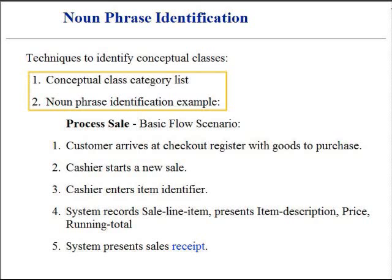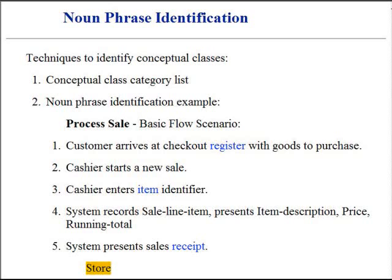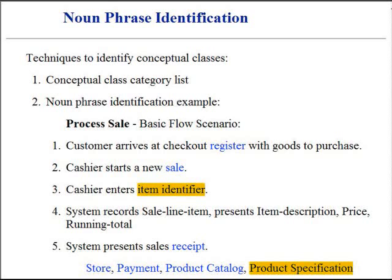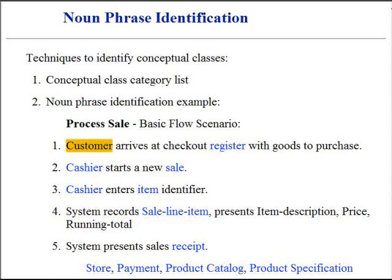From a list of conceptual classes and from corresponding noun phrase analysis, a list is generated of candidate conceptual classes for the business domain. The classes are: Register, Item, Store, Sale, Payment, Product Catalog, Product Specification, Sales Line Item, Cashier, Customer, and Manager.